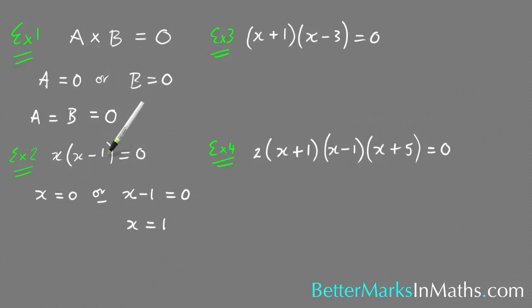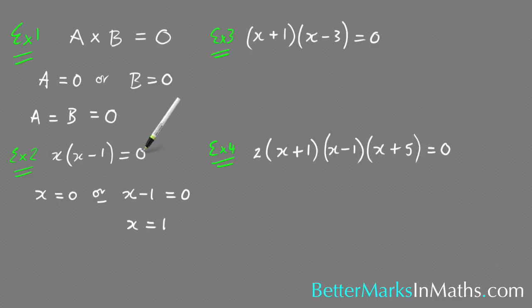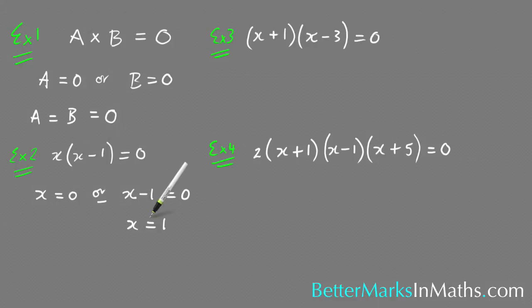So the answer is x equals 0 or x equals 1. You can verify these: if x equals 0, you get 0 times (0 minus 1), which is 0 times minus 1, which equals 0. If x equals 1, you get 1 times (1 minus 1), which is 1 times 0, which also equals 0. If your answers don't make the expression equal 0, you've made a mistake.